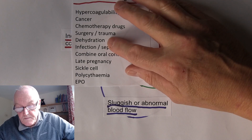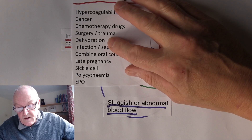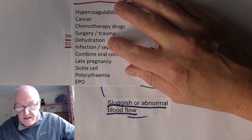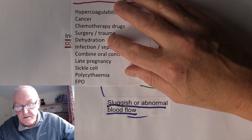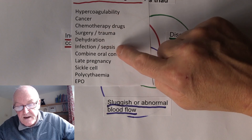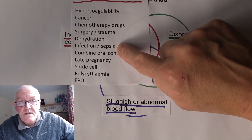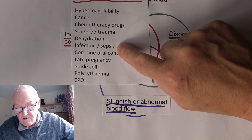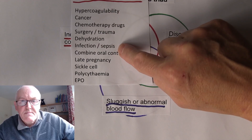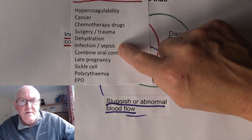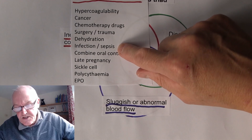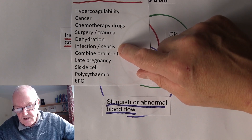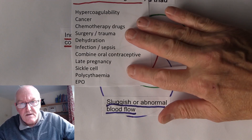Dehydration is a fairly obvious factor. If there's dehydration, there can be a reduction in the plasma component of the blood and the cells become more concentrated. Infection and sepsis can also increase the coagulability of the blood, and in extreme cases there can be a condition called disseminated intravascular coagulation, though I won't go into that here as there are other videos covering it.